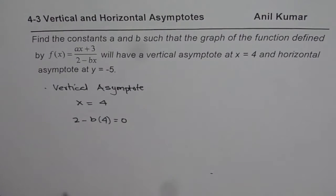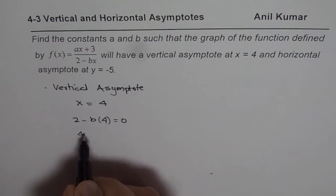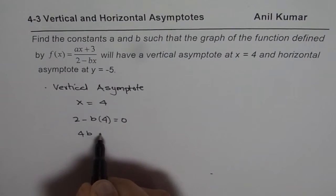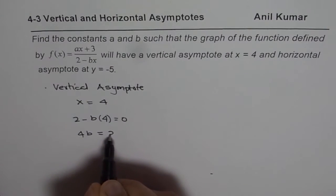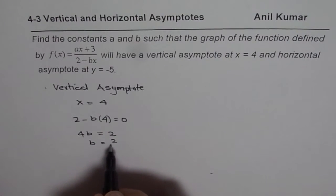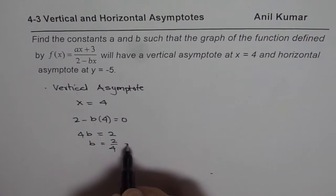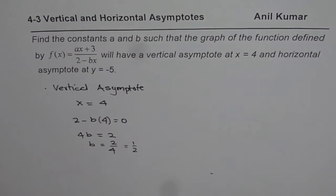Now we solve for b. Rearranging gives us 4b equals 2, or b equals 2 over 4, which is one half. So we get the value of b as one half, or 0.5. That is the first part.